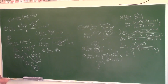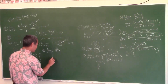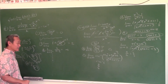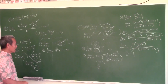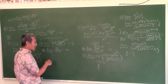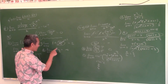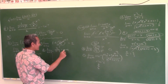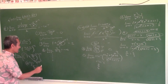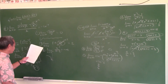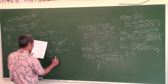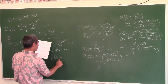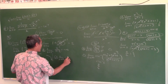Limit as x approaches 2 from the left of x/(x−2). Plugging in 2 gives 2/0, indicating a vertical asymptote. Approaching from the left, plug in something close like 1.99: the numerator 1.99 is positive, and 1.99 − 2 is negative, so positive over negative is negative. The answer is negative infinity — the graph explodes downward.